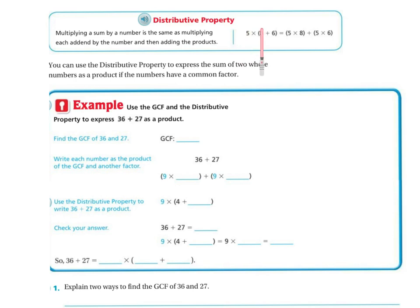Because we're saying 5 times 8, 5 times 6. So they just broke it apart. 5 times 8 here, 5 times 6 here, and then we add them together. So you can use the distributive property to express the sum of two whole numbers as a product if the numbers have a common factor.